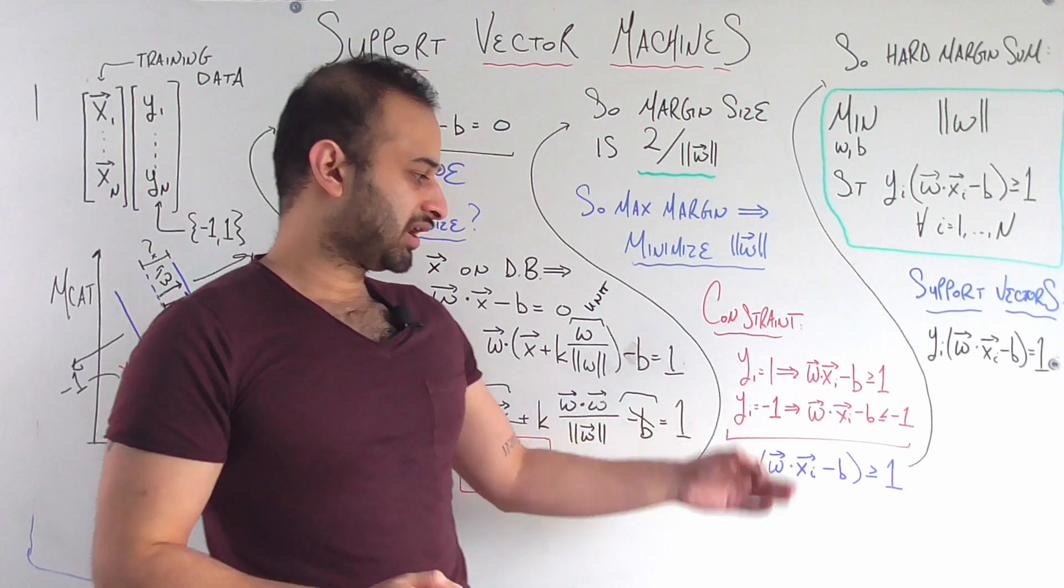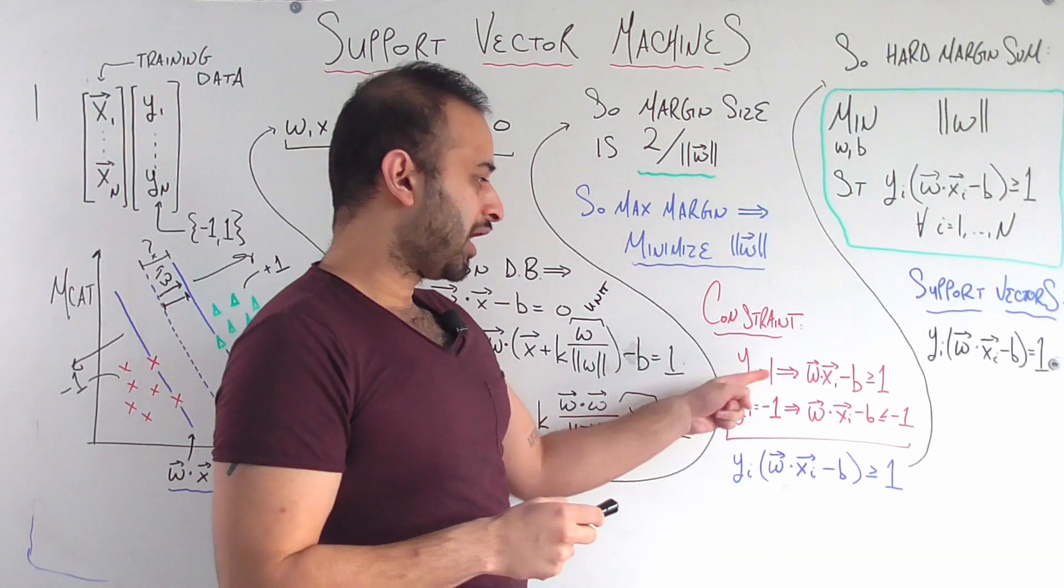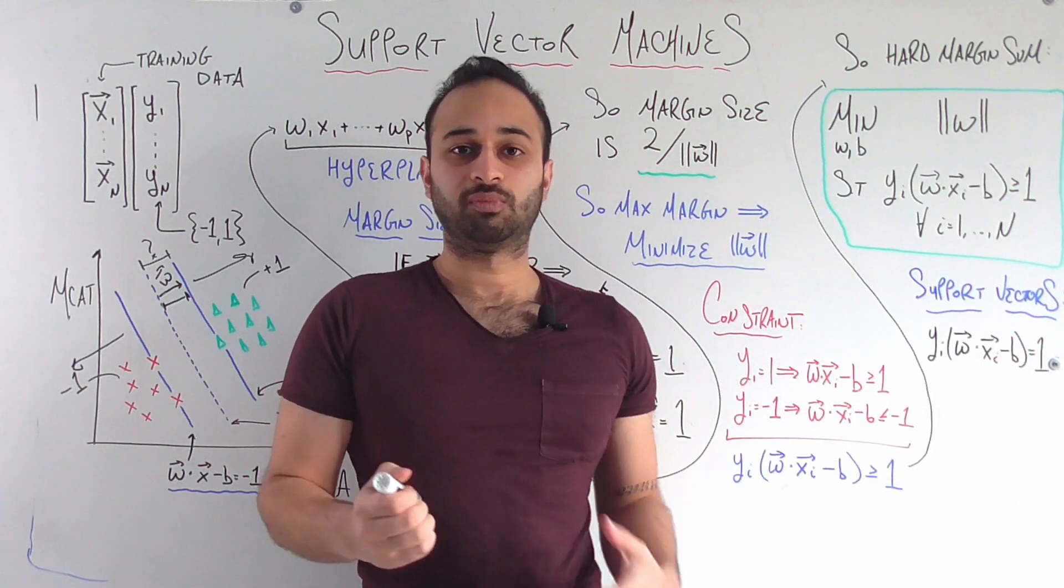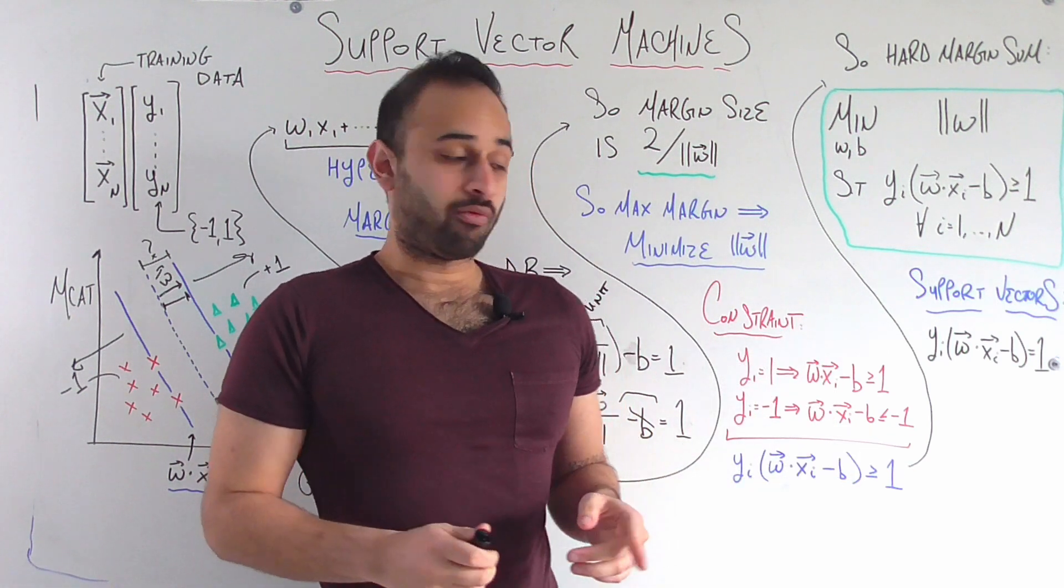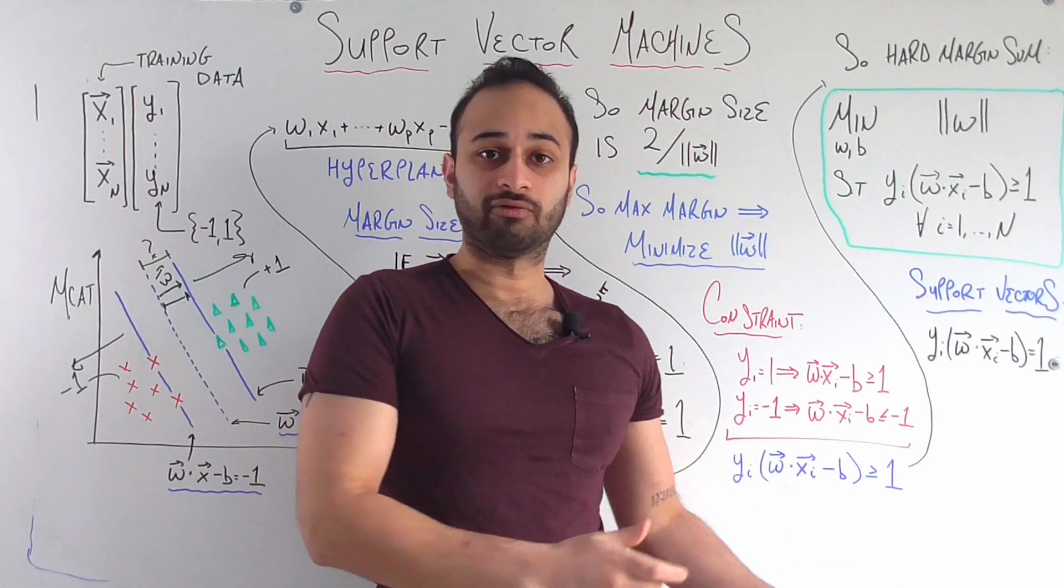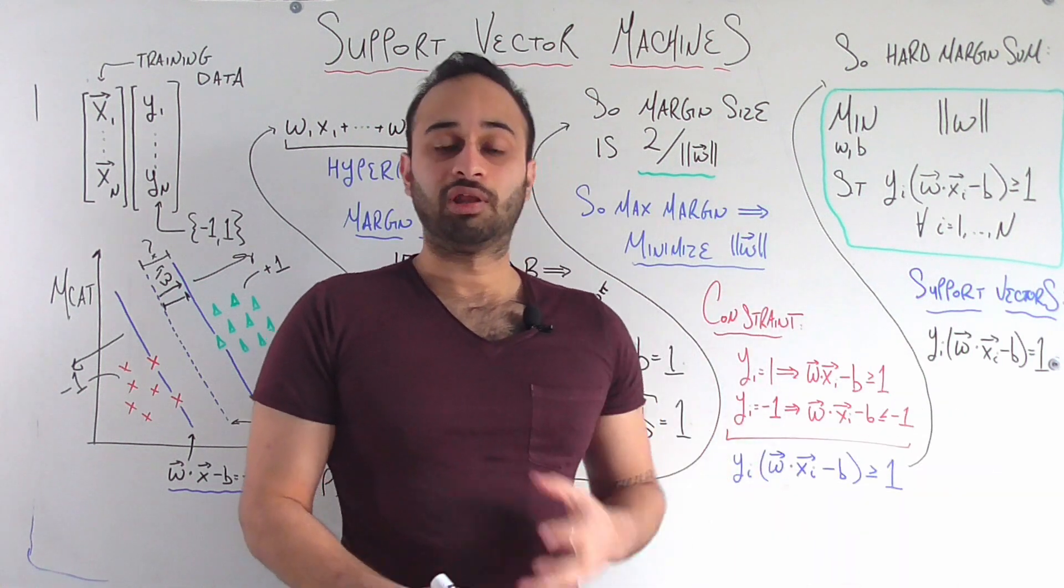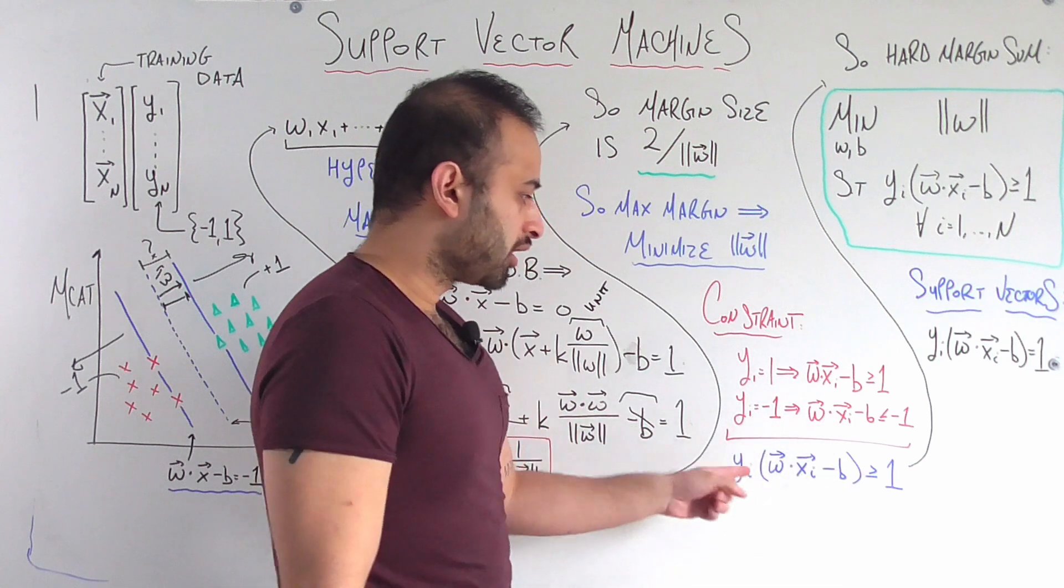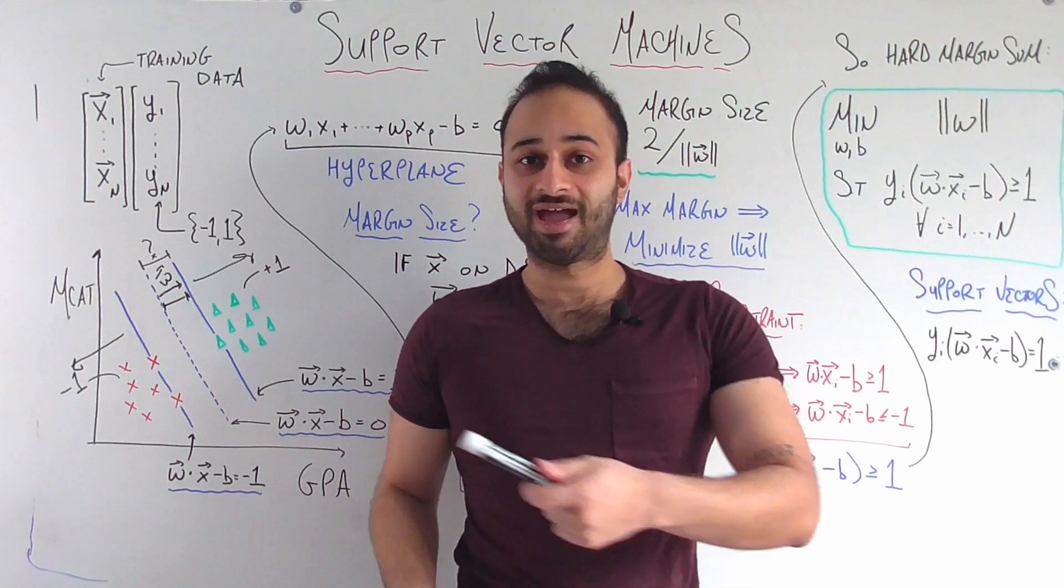So these two conditions together can actually be written in a compact form, because notice that if we have yi equals 1, we need this quantity to be bigger than or equal to 1, which means that the product of these two quantities would be bigger than or equal to 1. And if yi equals negative 1, then this quantity needs to be less than or equal to negative 1, which again means that the product of them is bigger than or equal to 1. So in all cases, we need that yi times that quantity is bigger than or equal to 1 for all i going from 1 to n.